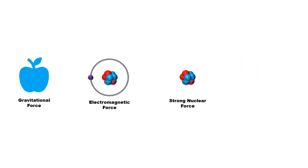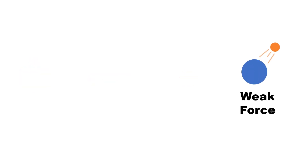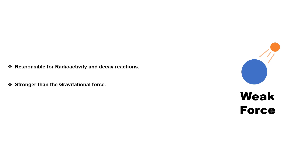With the discovery of radioactivity, a strange thing was observed: in beta minus decay, electrons are coming out from inside the nucleus, while there is no electron inside the nucleus. To explain this, a new force was introduced, which is called weak force. This force is responsible for the decay process. Weak force is just weak in name — in fact, it is 10²⁵ times stronger than the gravitational force.